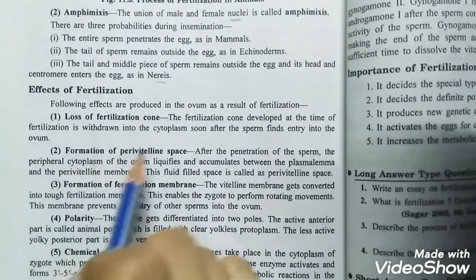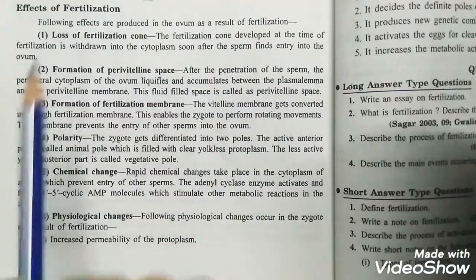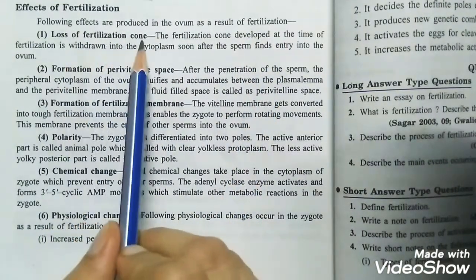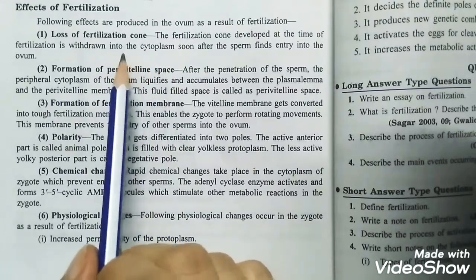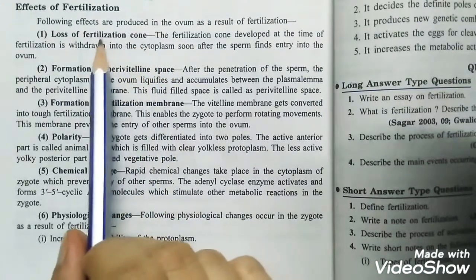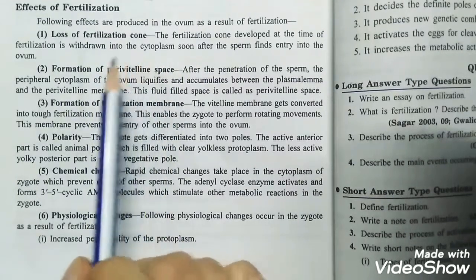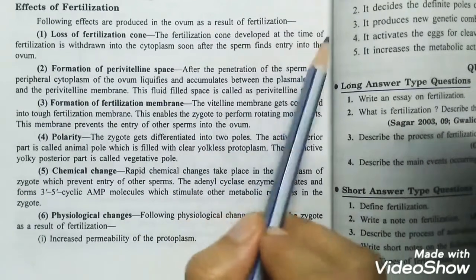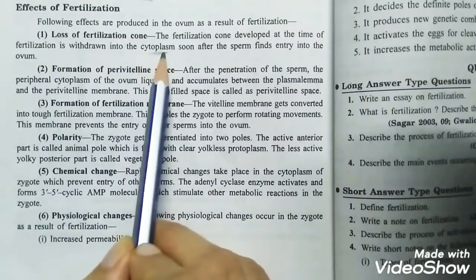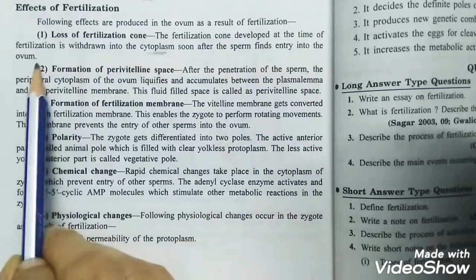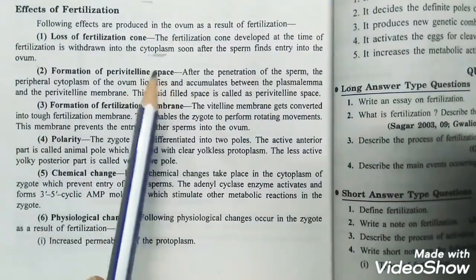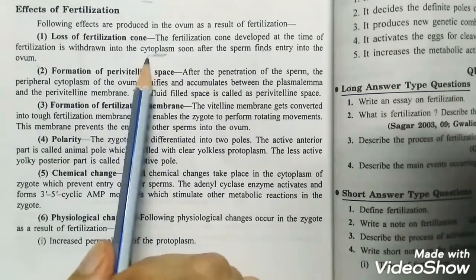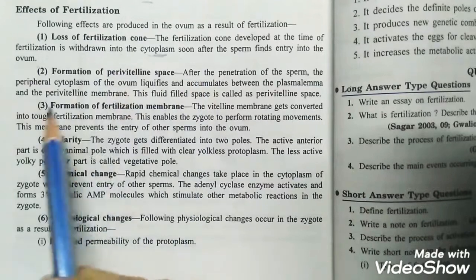Now we will see the effects of fertilization. The following effects are produced in the ovum as a result of fertilization. First is the loss of the fertilization cone. The fertilization cone that was formed during the fertilization process will be lost — it is withdrawn into the cytoplasm soon after the sperm finds entry into the ovum.